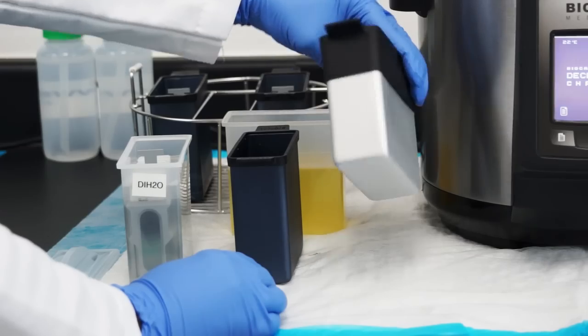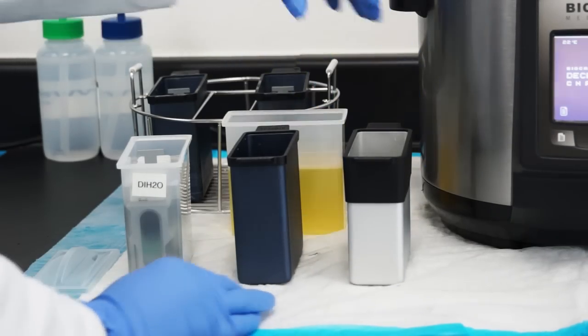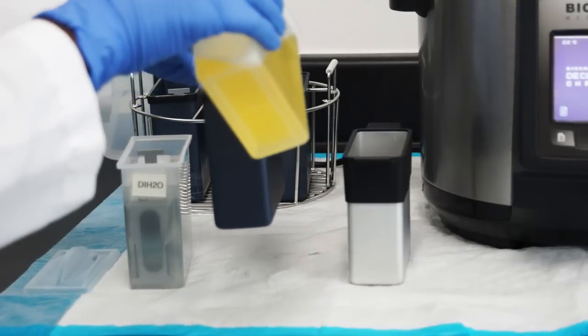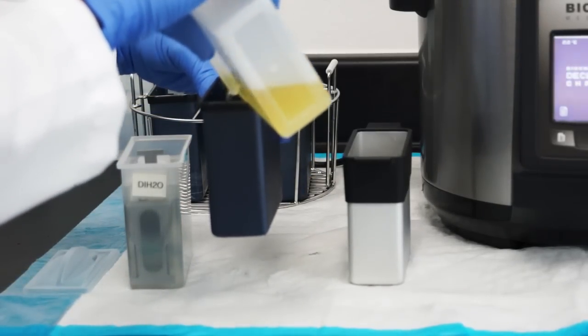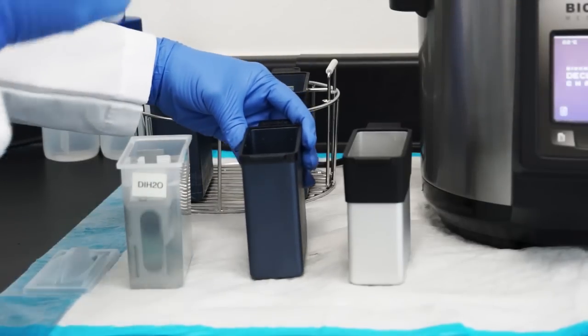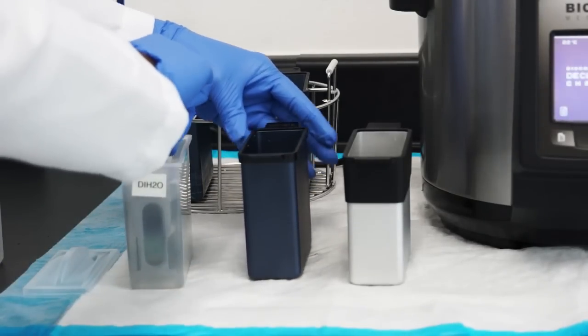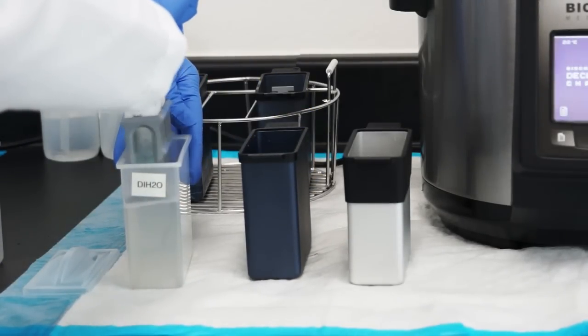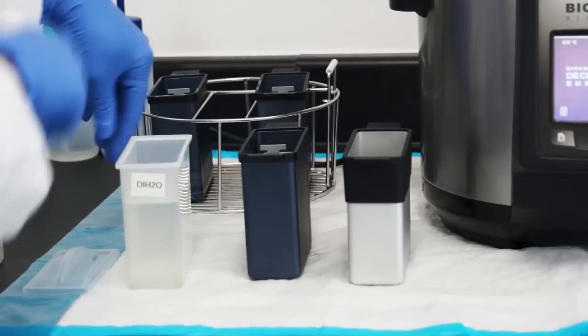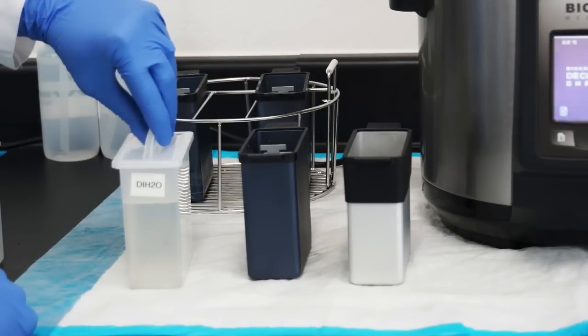There are two types of metal slide canisters available for the decloaking chamber next-gen. Despite the different handle lengths and exterior colors, both types of aluminum canisters provide rapid and even heat transfer from the unit's heating elements to the retrieval solutions and the slide-mounted tissue sections. For best results, use at least 200 milliliters of retrieval solution in the metal canisters.